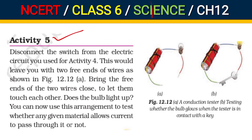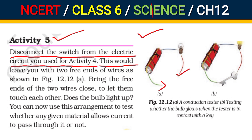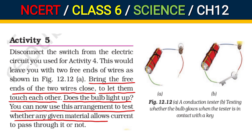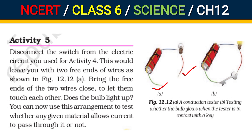Let us find out. With two free ends of wire, as shown in figure 12.12a, bring the free ends of the two wires close together to let them touch each other — the bulb will light up and glow. You can now use this arrangement to test whether any given material allows current to pass through it or not. If the bulb glows, then current passes through it. This is Activity 5.